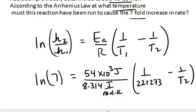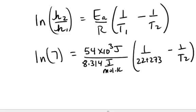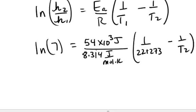So if I do the math there, just take the natural log of 7 and divide by this quotient, 54 times 10 to the third divided by 8.314, and then subtract this number from both sides of the equation, and then take the inverse, I can calculate the T2 all in my calculator, and that will give me 324 kelvin,